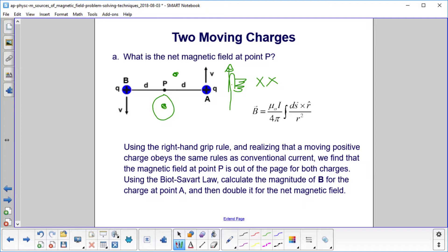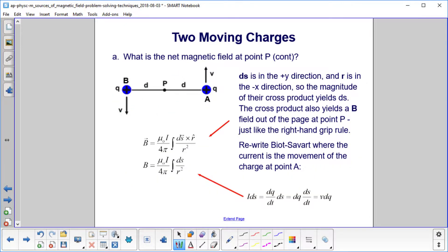We will now use the Biot-Savart law to calculate the magnitude of B, and we'll do it for this charge here, and then just double it for the net magnetic field, because the magnitude will be the same for this charge as it's the same distance away.